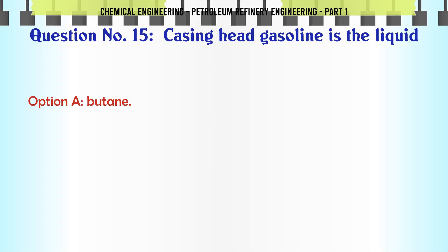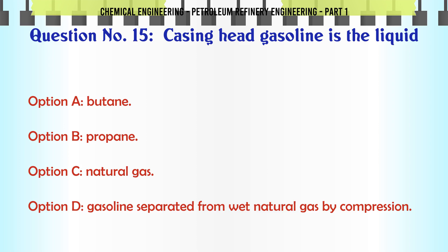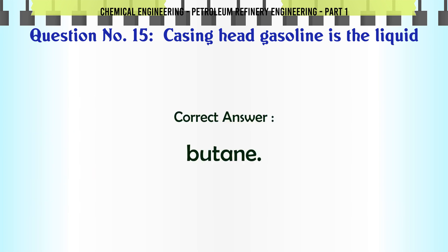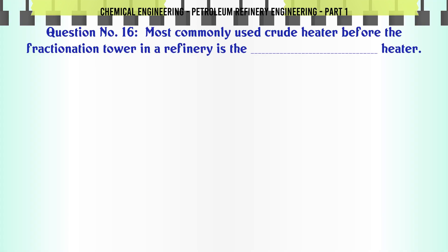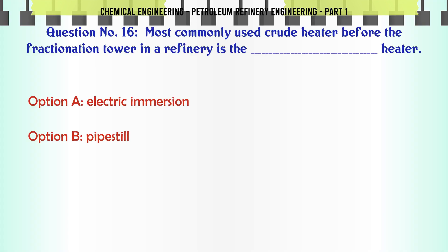Casinghead gasoline is the liquid: A. Butane, B. Propane, C. Natural gas, D. Gasoline separated from wet natural gas by compression. The correct answer is Butane.